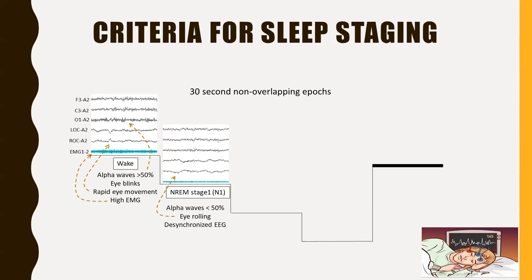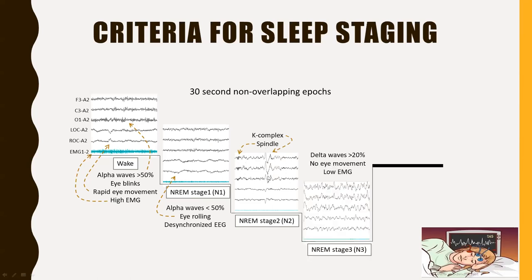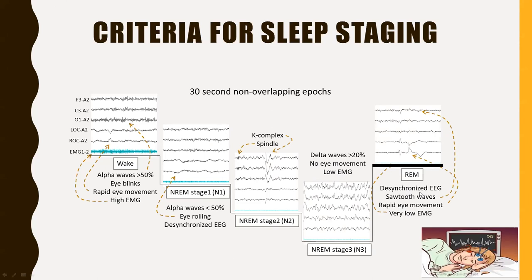As alpha reduces and we see slow eye rolling movements with reduced EMG compared to wake, we classify it as N1. The hallmark of Stage N2 is the occurrence of sleep spindles and K complexes. As sleep progresses to the deeper state, EEG waves become high amplitude and low frequency — moving into the delta frequency range — and we call it the deep sleep state (N3). Then we get REM sleep, which is called paradoxical sleep.